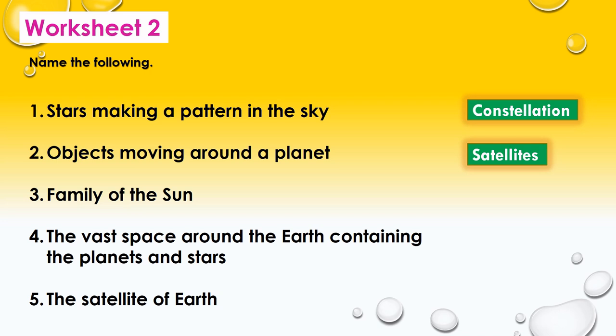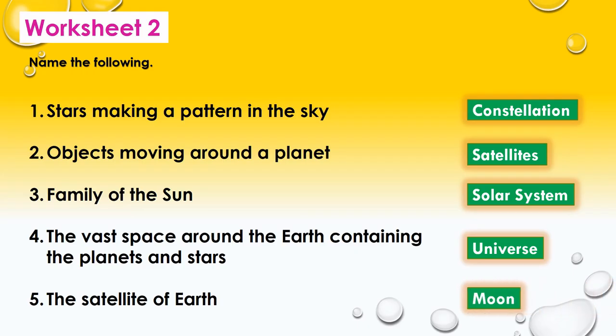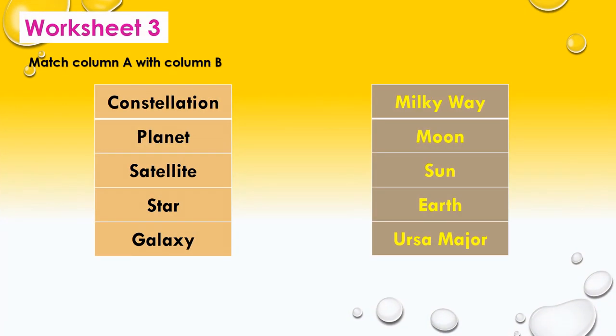Moving to the third one: The family of the Sun is called the solar system. Going to the fourth one: The vast space around the Earth containing the planets and stars is called the universe. Going to the fifth one: The satellite of the Earth is the moon.